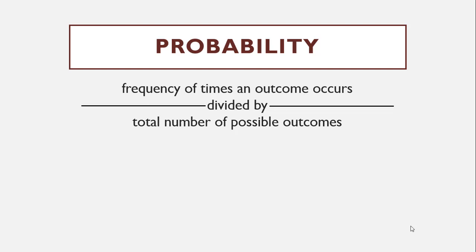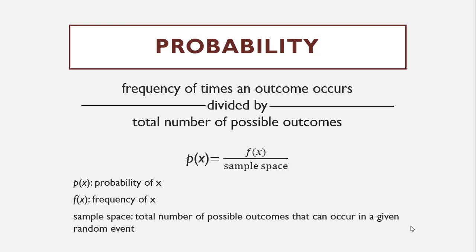We're going to continue to build on that, but at the basic level, that's what we're doing. When we say the probability of a certain outcome, we have that represented as the probability of X. We can write that out as P(X) equals the frequency of X, F(X), divided by the sample space. When we say sample space, what we mean is the total number of possible outcomes that can occur in a given random event.